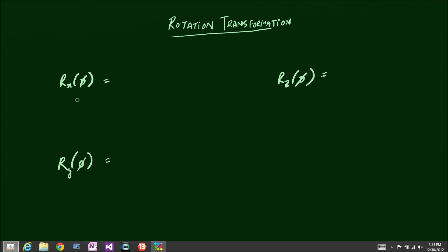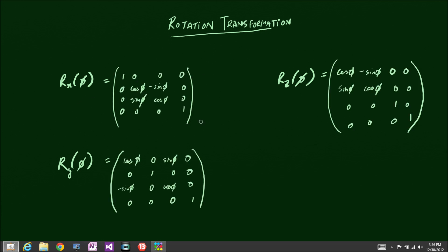A rotation matrix multiplied by a rotation matrix is a rotation matrix. Here we have four-by-four matrices on screen. These are algorithms that define rotations in each of the axes — we define the X, Y, and Z axes in that order, hence the numerical labels 1, 2, and 3.